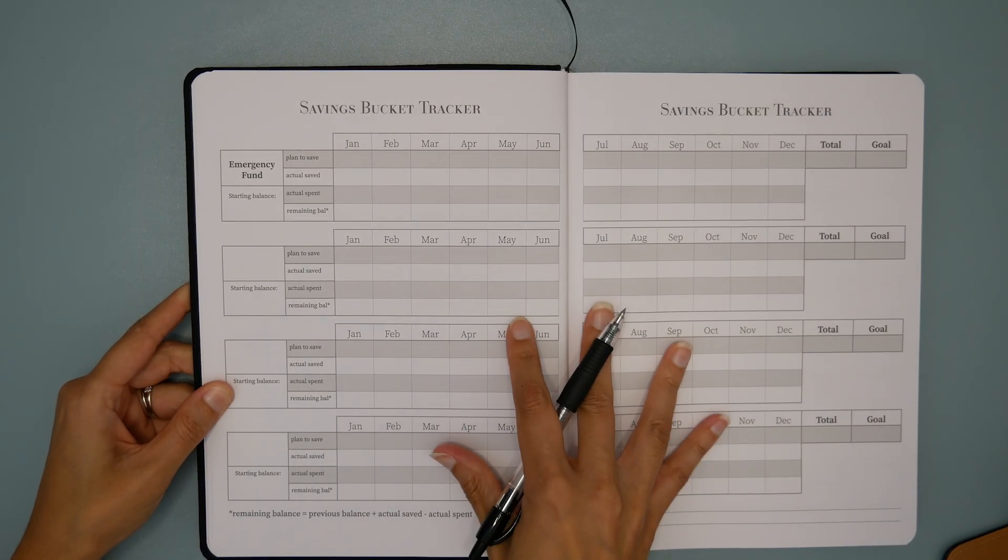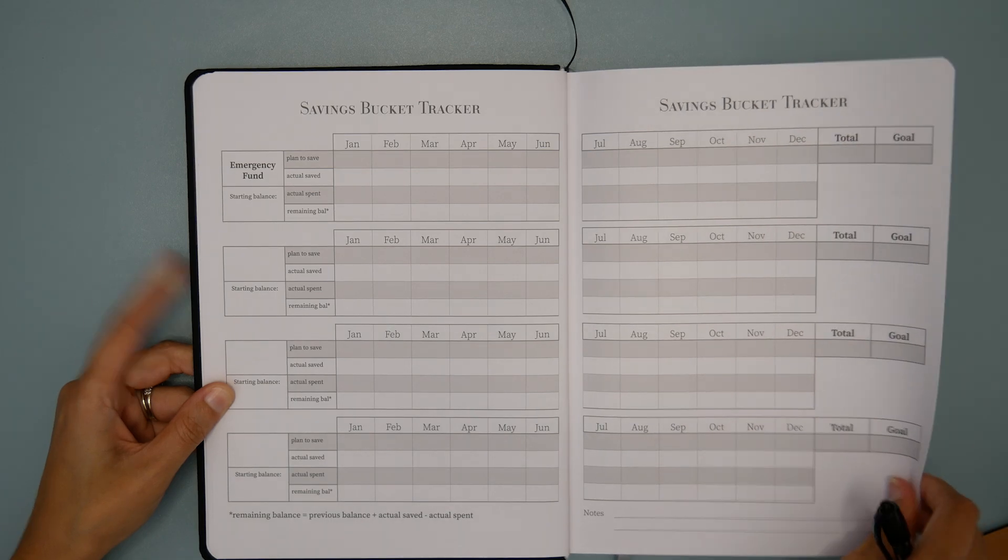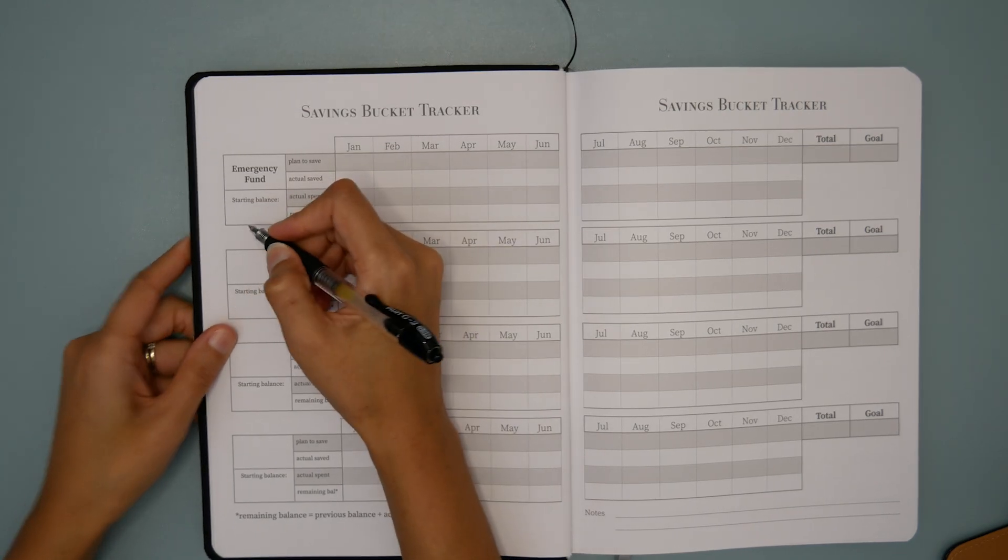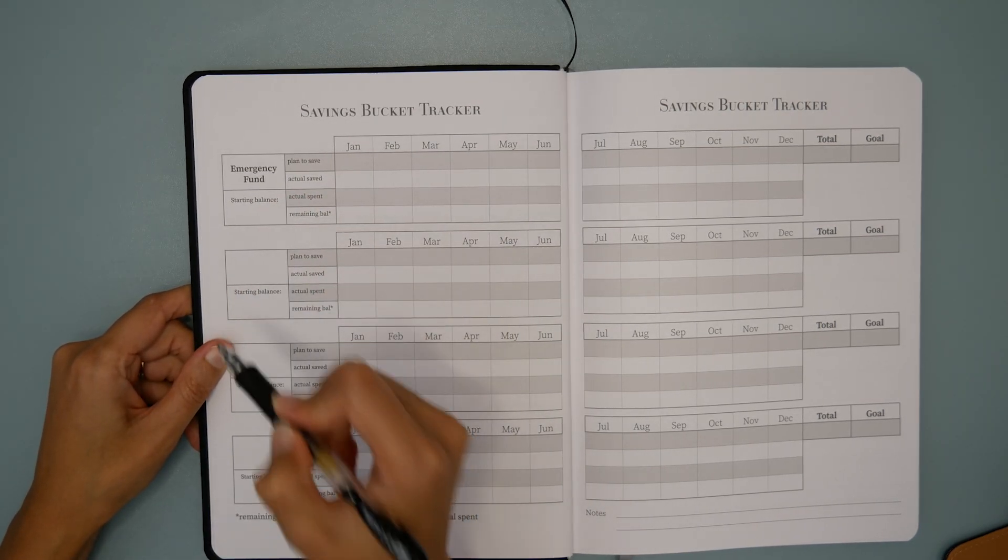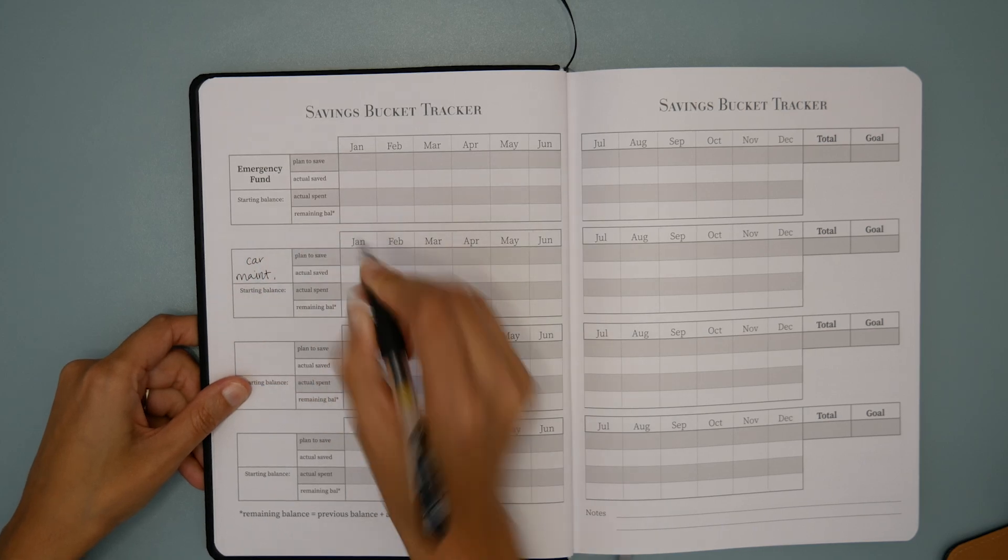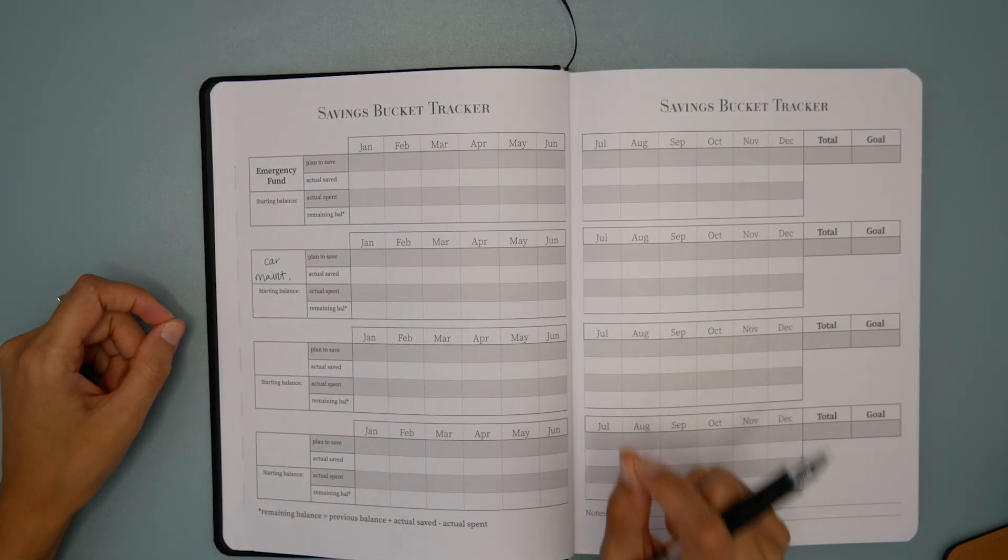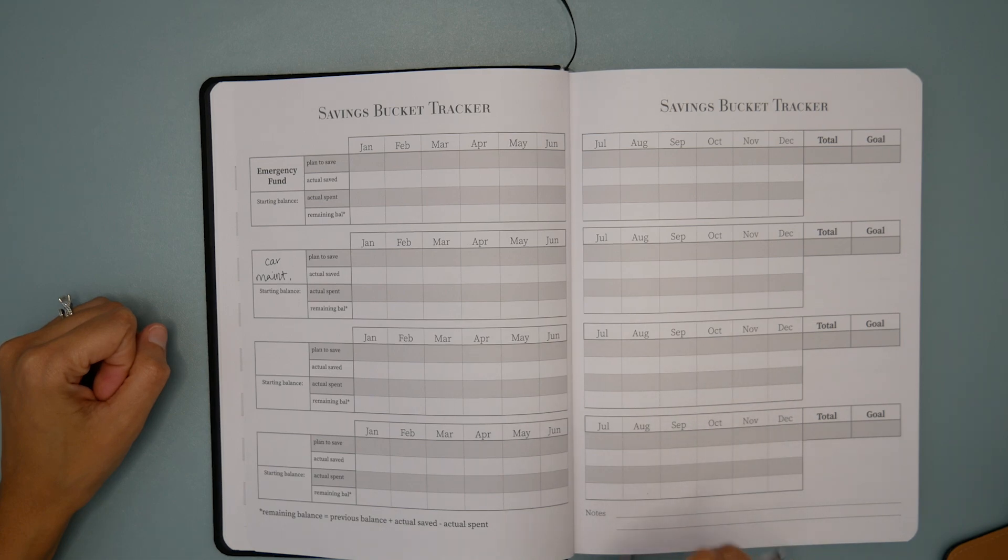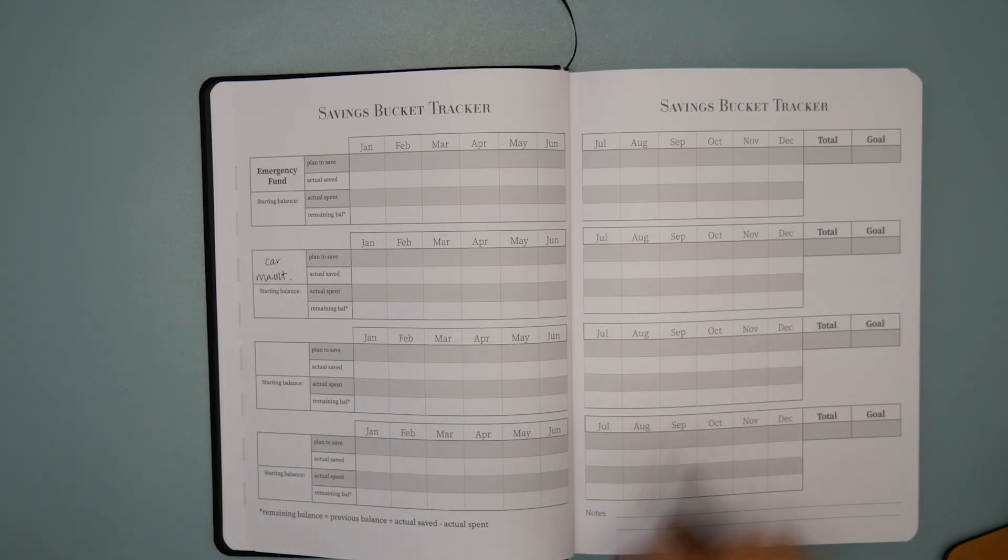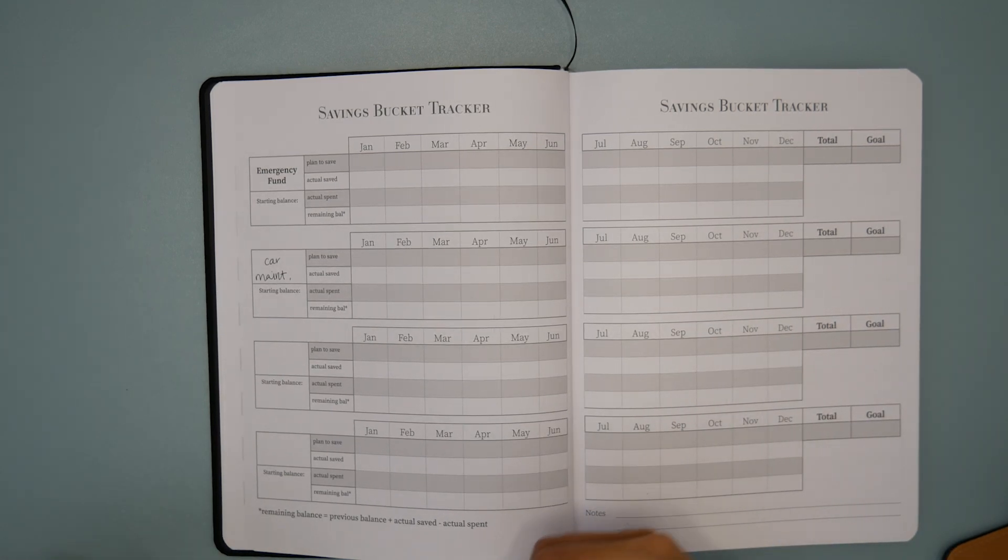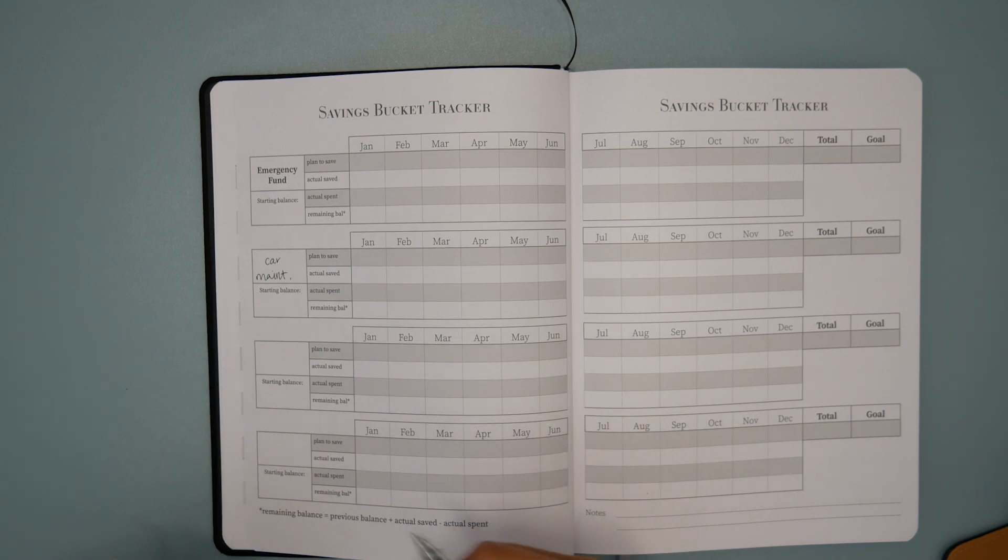Let's move over a page to the first savings bucket tracker spread. We can put four buckets here. Emergency fund is there by default. I want to make sure that we put car maintenance. That needs to become a bucket. Now, in her questionnaire, she mentioned a couple more things that I think are excellent fits to become savings buckets. One of them is youth sports costs. There are tournaments, traveling to those tournaments, hotel stays, gear, costs really add up with that. It looks like there's $692 for that youth sports line.